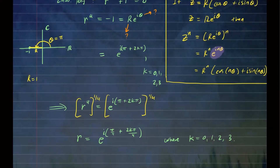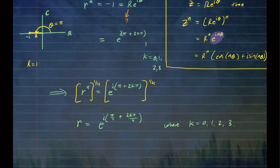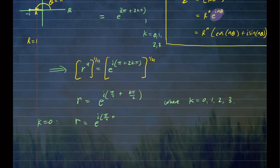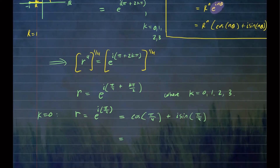Complex roots come as conjugate pairs, so if you know one root you already know the other. For k = 0, r equals e to the i·π/4, which by Euler's identity is cosine(π/4) + i·sine(π/4). That equals 1/√2 + i·(1/√2). That's one root, and its conjugate pair is another, so we already know two roots — r1 and r2.